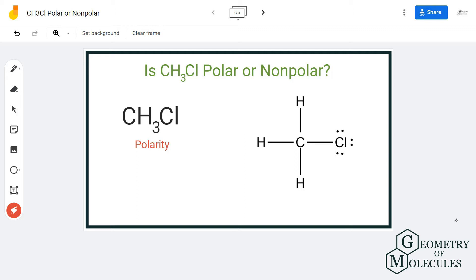Hey guys, today we are going to look at the polarity of chloromethane, having a chemical formula of CH3Cl. Chloromethane is a molecule made up of three atoms: carbon, hydrogen, and chlorine.